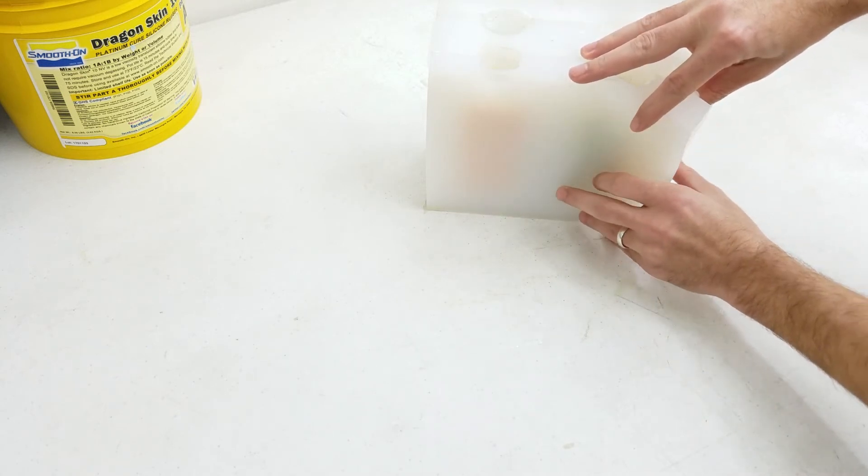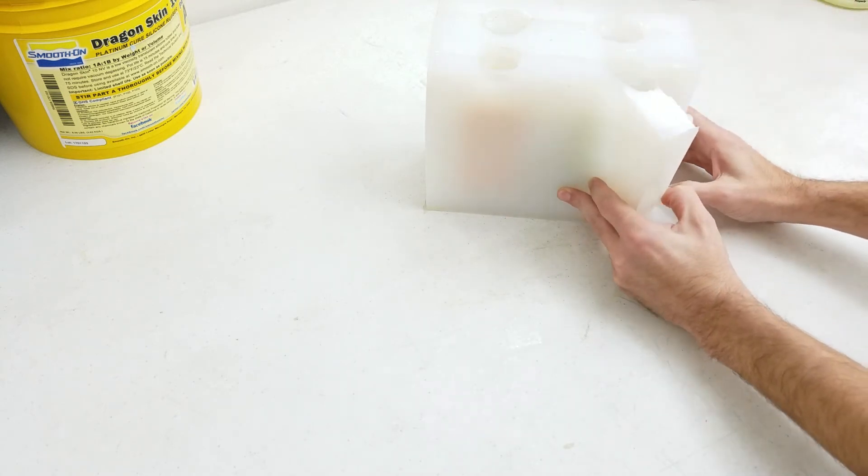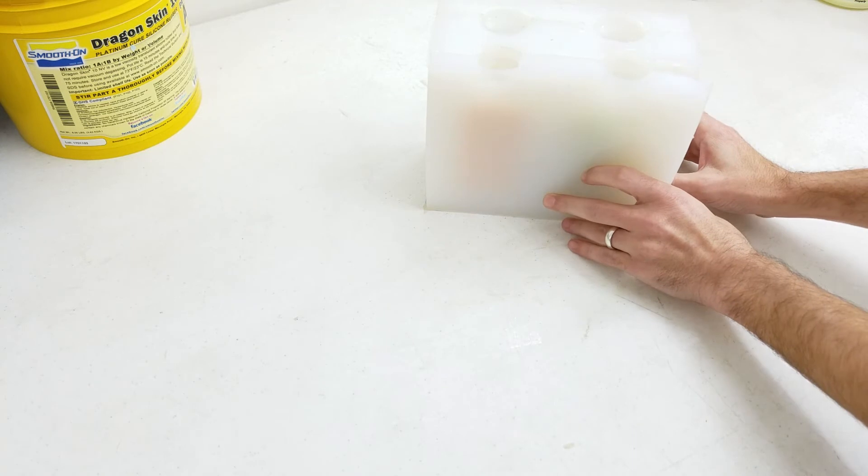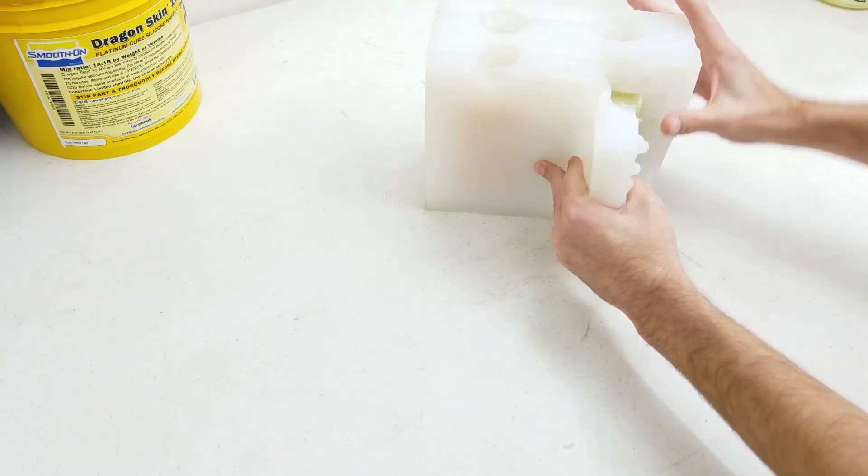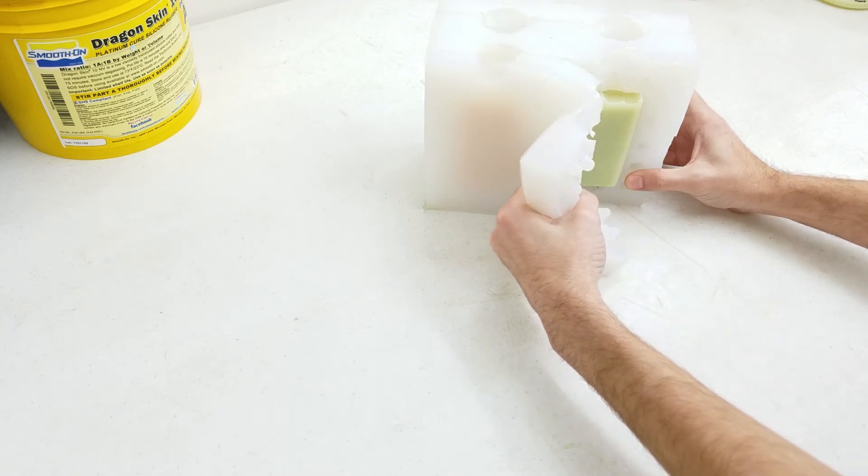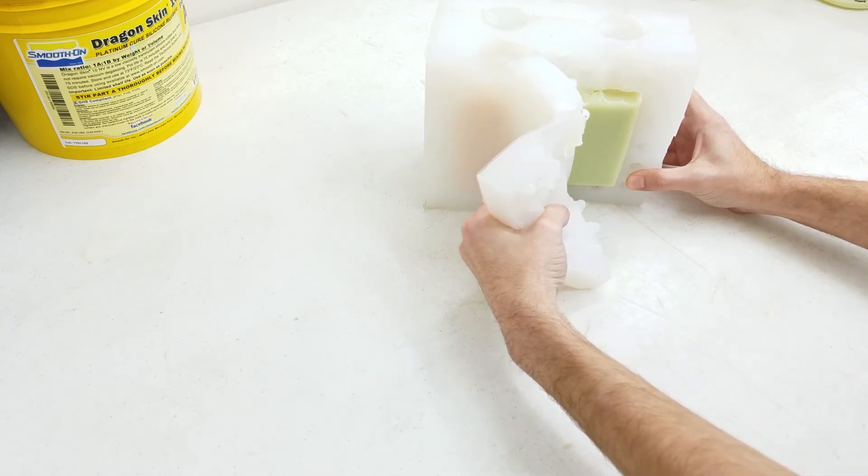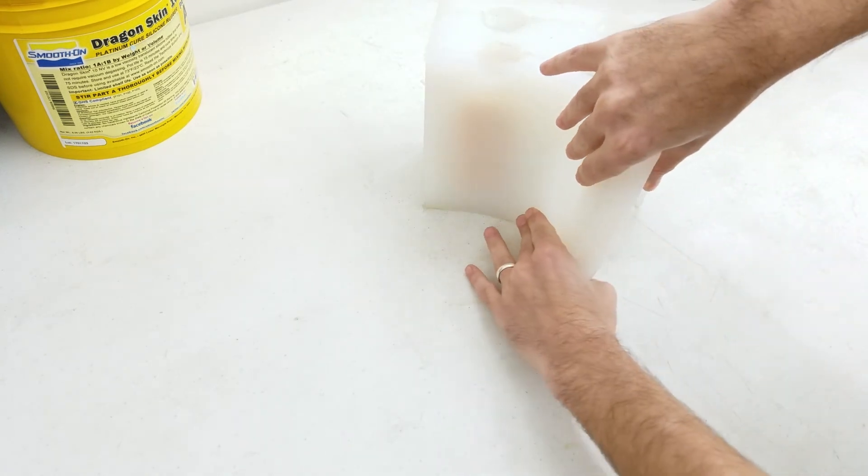I'm going to start peeling off this end cap here and I'm going to be really delicate about how I do it this first time but honestly with the square shape of these bars I could most likely just rip this thing right off and there wouldn't be any issues at all.